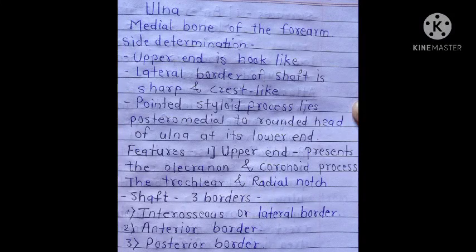Now, the ulna. Ulna is a medial bone of the forearm. For side determination: the upper end is hook-like, the lateral border of the shaft is sharp and crest-like, and a pointed styloid process lies posteromedial to the rounded head of the ulna at its lower end. Features of the ulna: the upper end presents the olecranon process and the coronoid process, the trochlear notch, and the radial notch. The shaft has three borders: interosseous (lateral) border, anterior border, and posterior border.